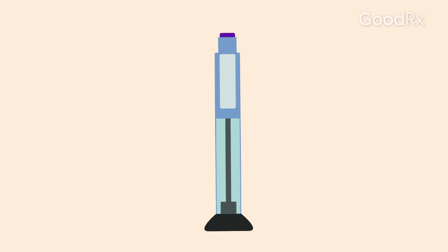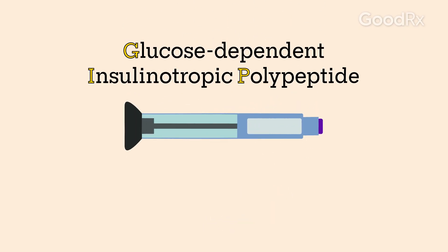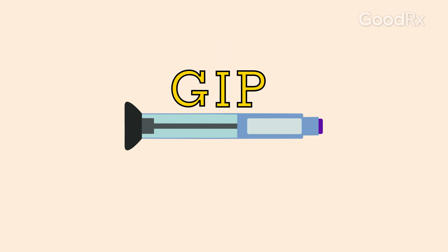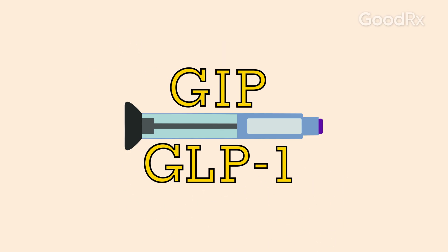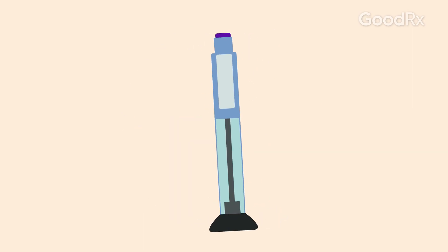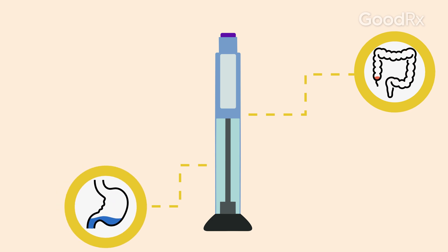ZepBound acts like two naturally occurring hormones in the body: glucose-dependent insulinotropic polypeptide, or GIP, and glucagon-like peptide-1, or GLP-1. These hormones are typically released by the gut and play a role in appetite and digestion. By acting like these hormones, ZepBound may help you feel more full and less hungry.